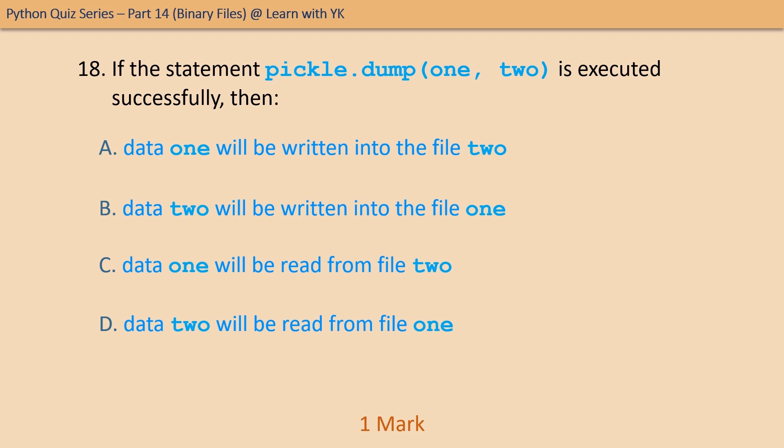Question number eighteen: if the statement pickle.dump(1, 2) is executed successfully, then — pick the correct option. The correct option is option A — data 1 will be written into file 2, where 1 is the data object name and 2 is the file name.